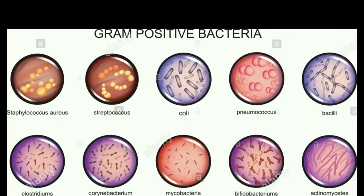This diagram shows examples of Gram-positive bacteria. They include Staphylococcus, Streptococcus, Clostridium, and others.